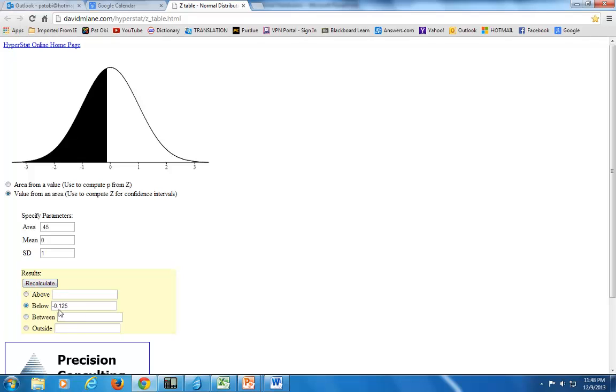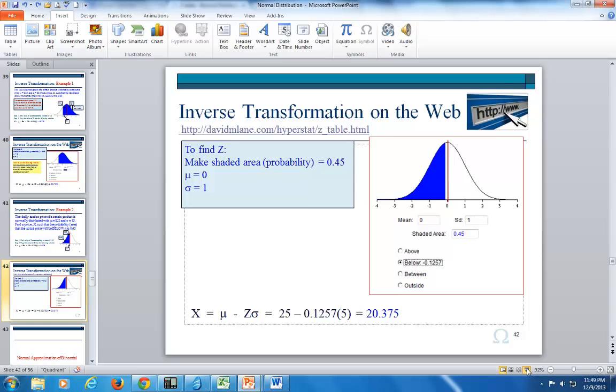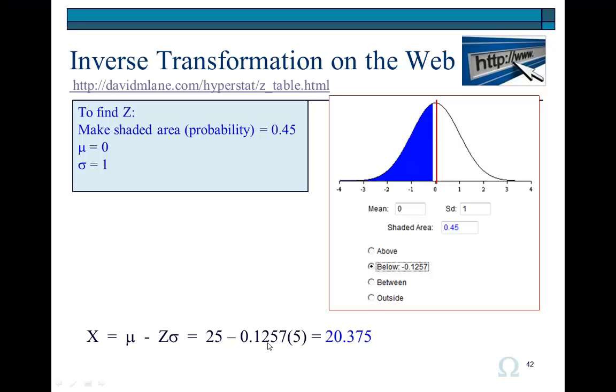So 0.45 and we're looking for the area below it. Alright? So we're looking for the area below that value of x. So we're going to check this below here and click recalculate. And already, it's given it to us as a negative 0.125. So that's the value of z, which we then plug in right here. And voila, we're done.